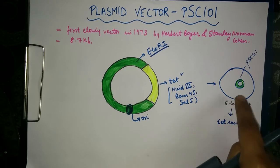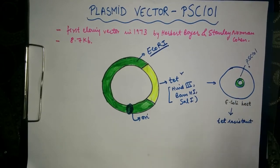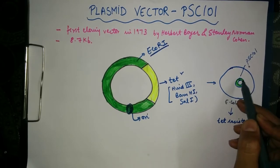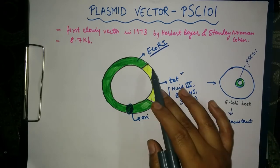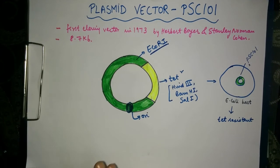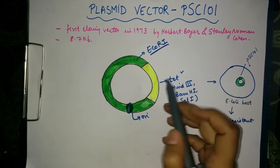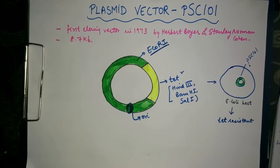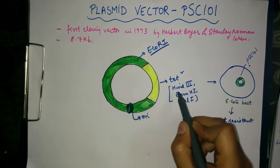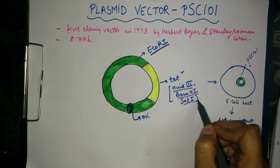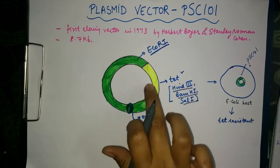In this first case, the cells may be recombinant or non-recombinant. That is, the chances are that the DNA insert might have either integrated into the plasmid at the ECO-RI site or might not. The second case we are discussing is that if we insert our DNA into the tetracycline resistant gene — specifically into the restriction sites of HIND3, BAMH1, or CEL1, which are present in this gene.